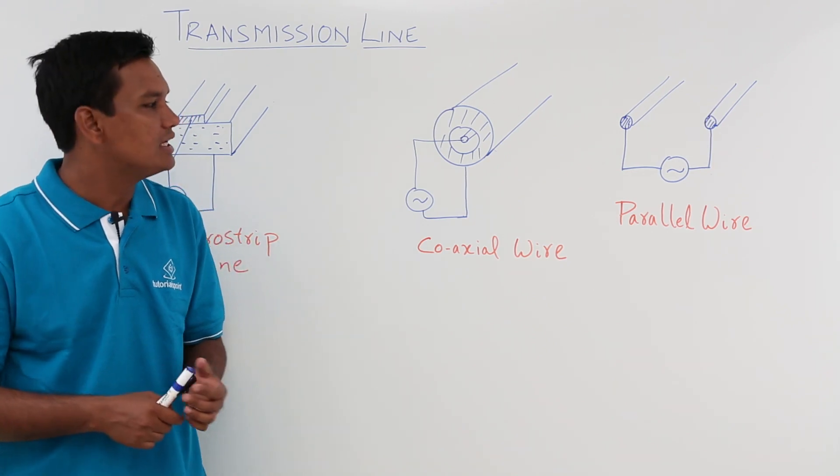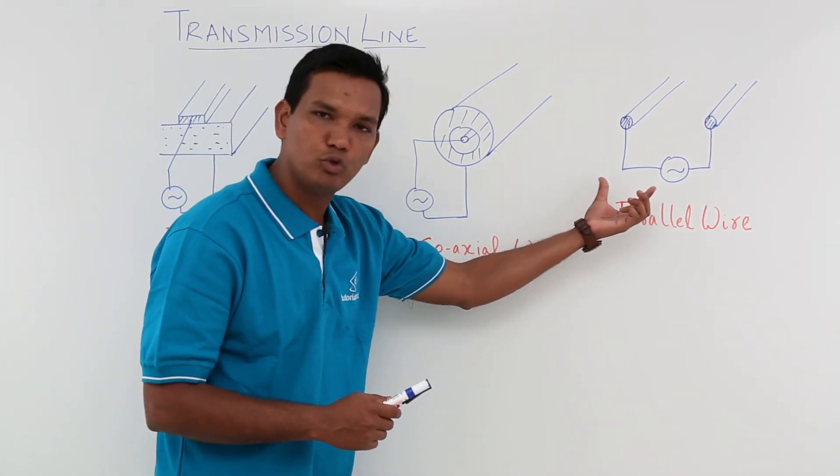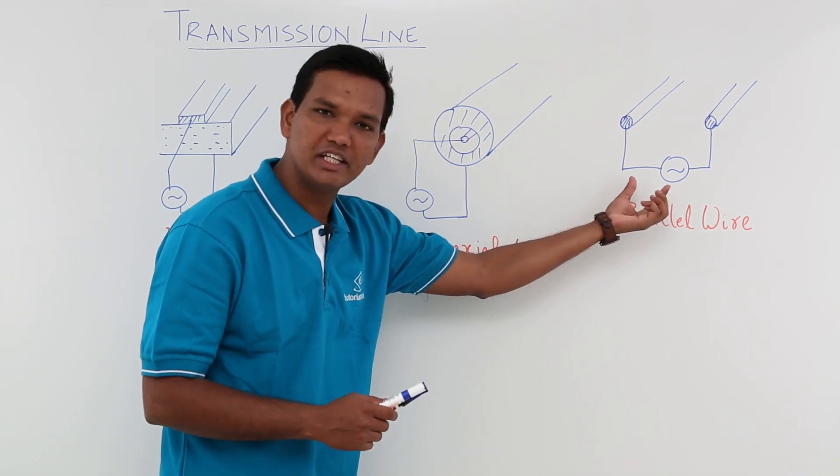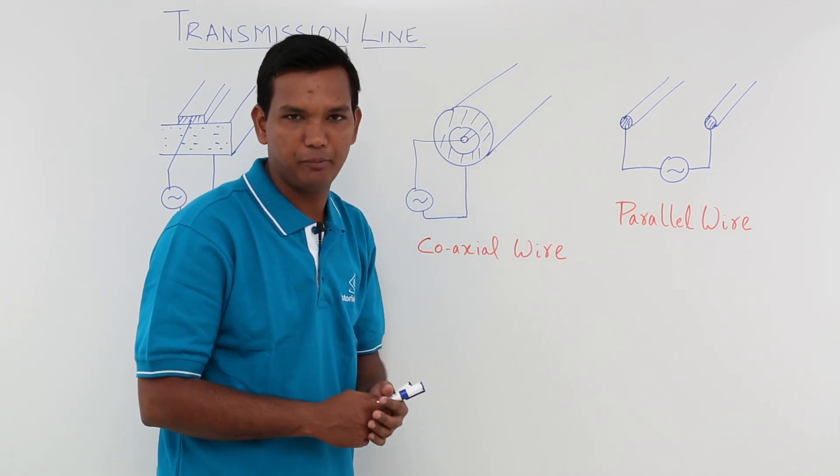Let us understand this by a simple parallel wire. As we know, a parallel wire will have two wires. We supply a voltage in between them and the power will be transferred from the starting point to the end point.